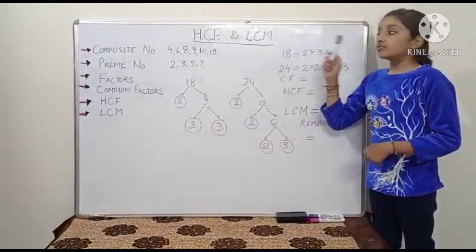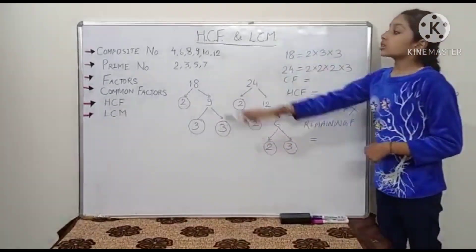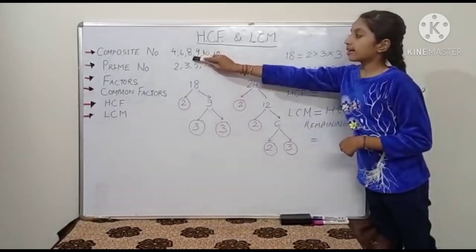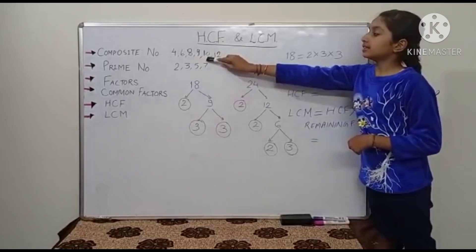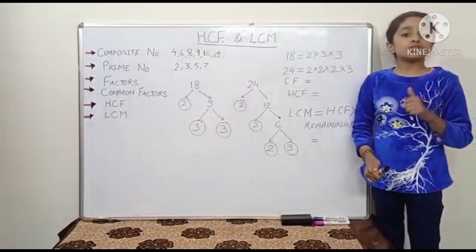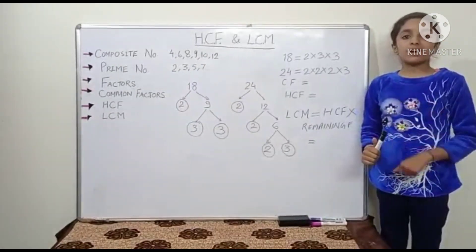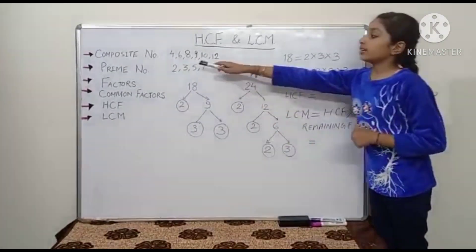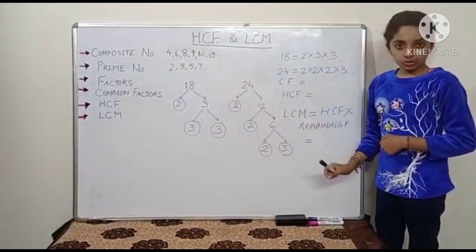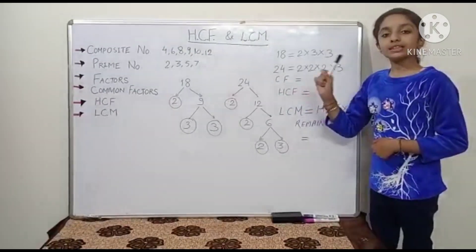First of all we will talk about composite numbers. Composite numbers are 4, 6, 8, 9, 10, 12, etc. Composite numbers are those numbers which can be divided completely. For example, 4 can be divided by 2, and 6 can be divided by 2 and 3.